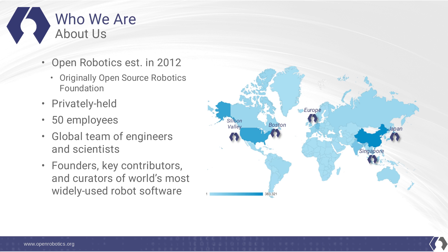Open Robotics was established in 2012, originally as the Open Source Robotics Foundation. It's a privately held company of about 50 employees spread all over the world, and we are the founders, key contributors, and curators of the world's most widely used robot software, ROS.